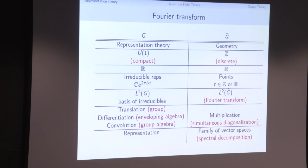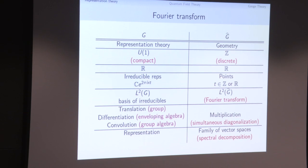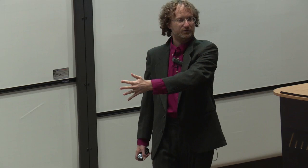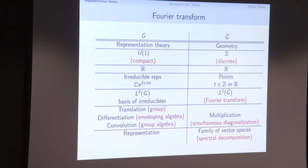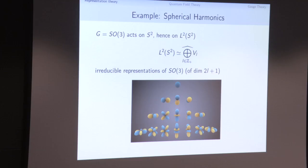The whole point of the Fourier transform is that we've taken anything coming out of the group and translated it into something much more geometric. The translation action of the group, differentiation, differential operators from the enveloping algebra, convolution from the group algebra — all of these operators become multiplication operators on the other side, simultaneously diagonalized. Any representation of G spreads out as a family of vector spaces — a sheaf or vector bundle or projection-valued measure — over the dual. This is a complete solution for representations of locally compact abelian groups, and the model for understanding non-abelian groups.